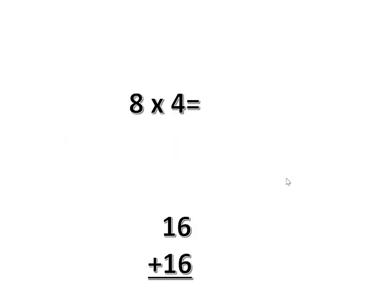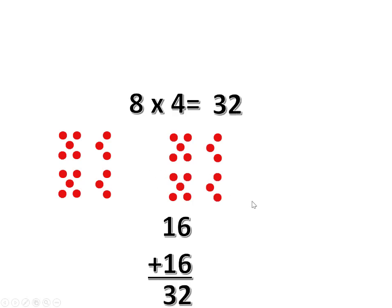8 times 4 is a little trickier. 10 and 10 are 20. 6 and 6 are 12. So we have to add the 12 to 20. We can say 20 plus 10 is 30 and then 2 more is 32. That's one way to do it.